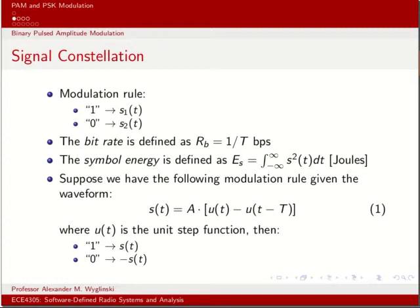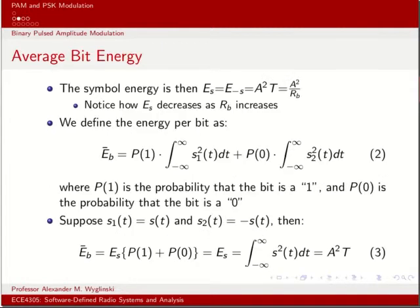Since we're dealing with potentially different symbol representations for various binary patterns, we first need to take the average of the symbol energies. Although symbol energy is useful, the fundamental unit of information in digital communications is the bit. We always want to know how much energy is being expended per bit rather than per symbol, so we have a means of fair comparison with other modulation schemes — since some symbols might have a different number of bits representing them.